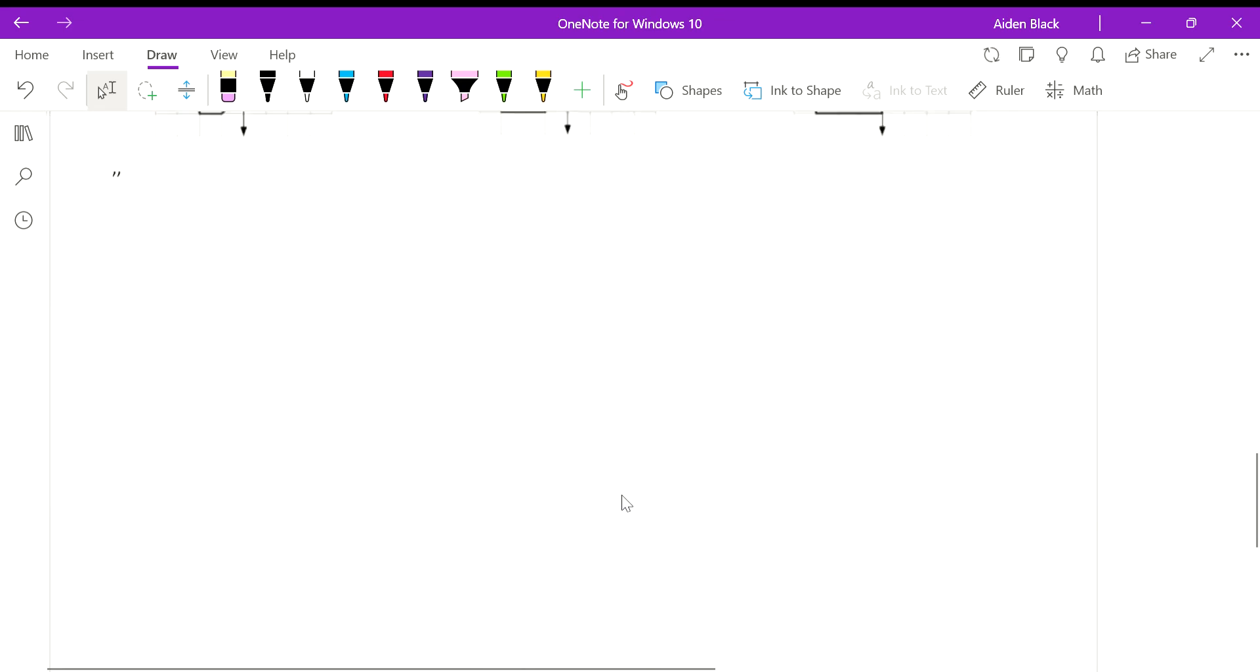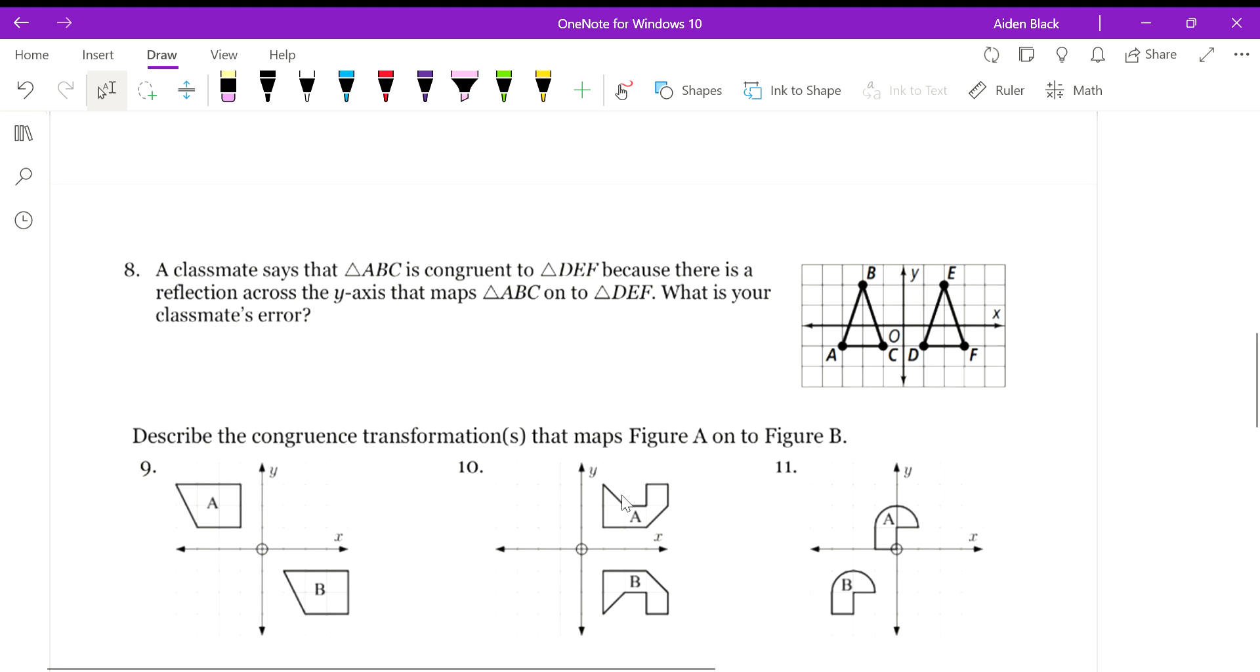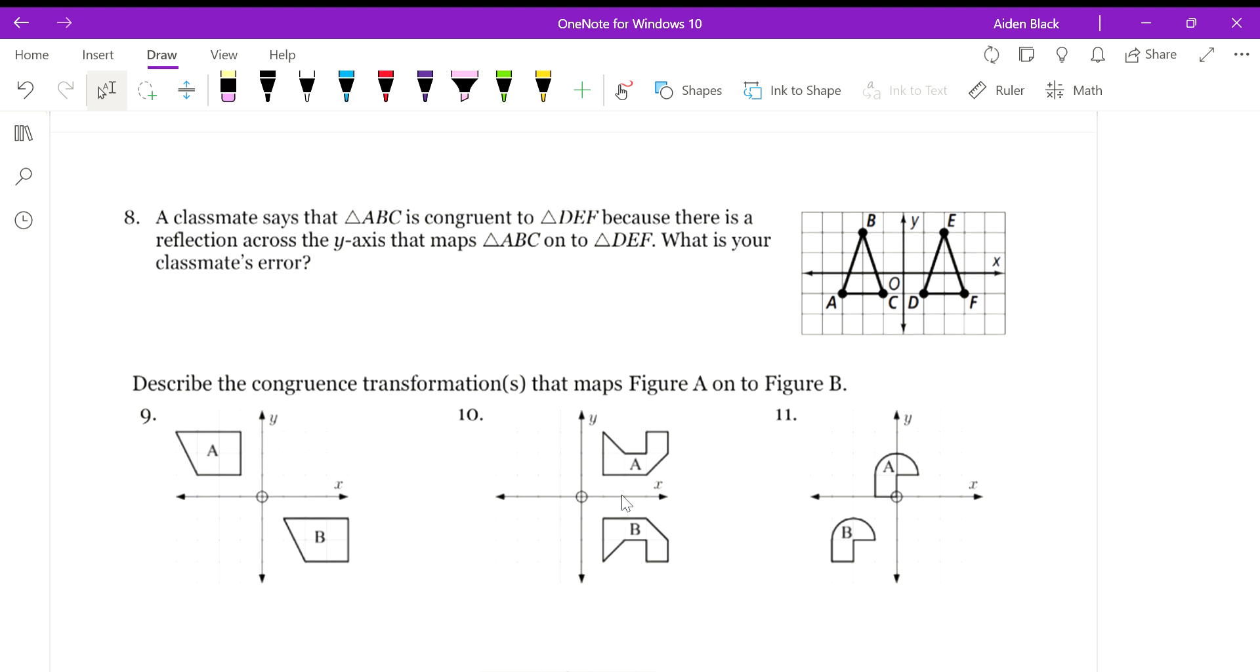All right, looking at 5.3 on the second page, these questions are very important for you to understand. If you can transform one object onto another object and all the points line up perfectly, then you know that those figures are congruent, and that's called transformation congruence.